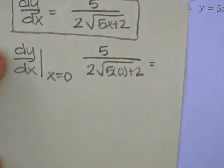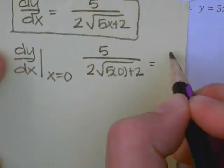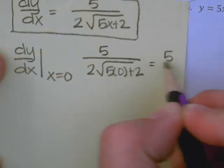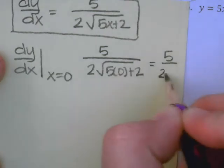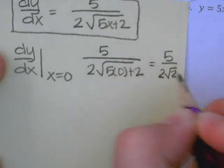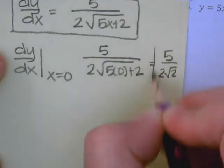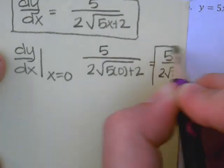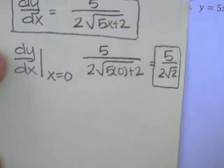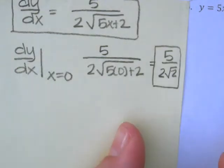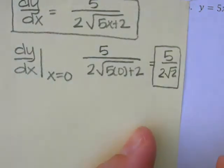And what do I get? I get 5 on top over 2 root 2. The nice thing about calculus is they'll let us leave answers like that. And so that is the slope at x=0 specifically.